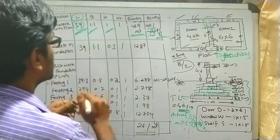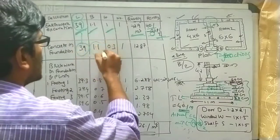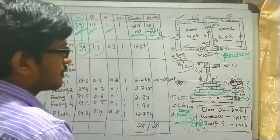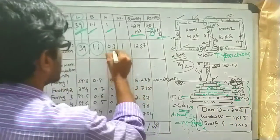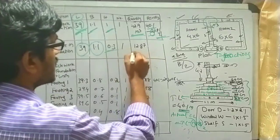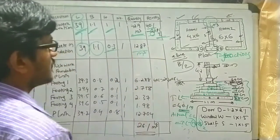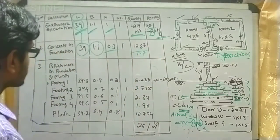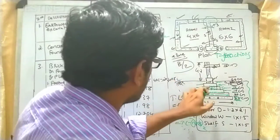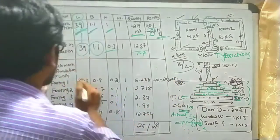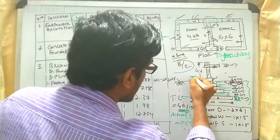Moving to concrete in foundation, the length and breadth remain the same but the height is 0.3 meter. Multiplying these values gives the quantity of concrete in foundation as 12.87 cubic meters.